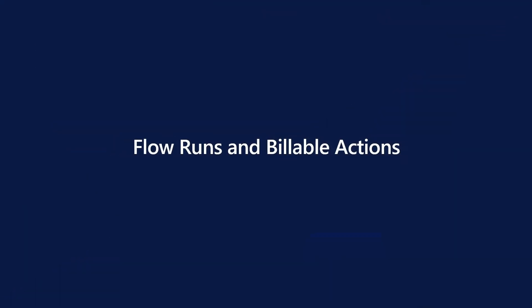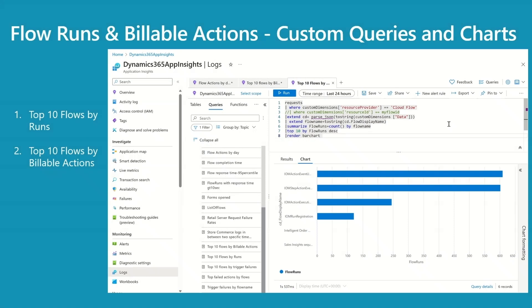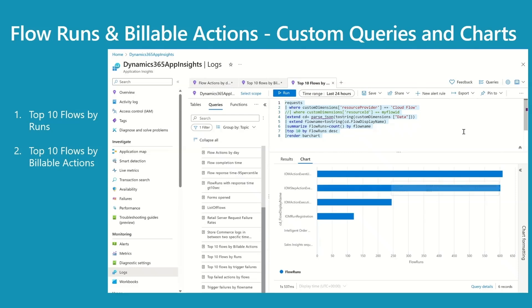Flow runs and billable actions — this section is about flow usage. We have two queries: top 10 flows by runs, and top 10 flows by billable actions. You may argue this information is already available in PPAC and flow level analytics, but if you're using App Insights as a holistic monitoring tool, it makes sense to have it right here. The first query returns the top 10 flows by runs — you can change that to top 50 or top 70 based on your environment. The first flow has 610 runs and the second has 692 runs in the last 24 hours. You can pin this chart to your dashboard.